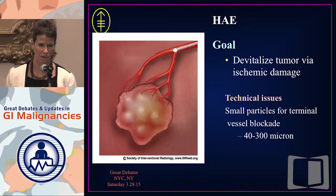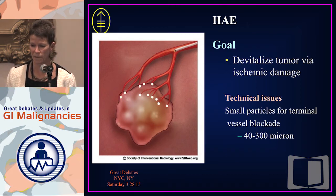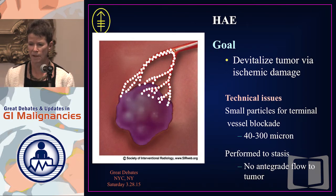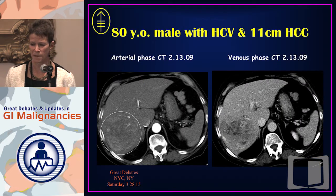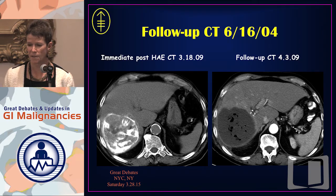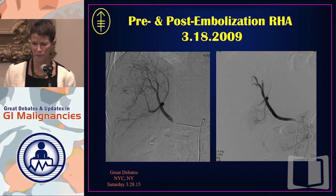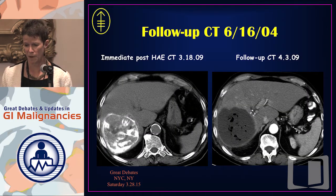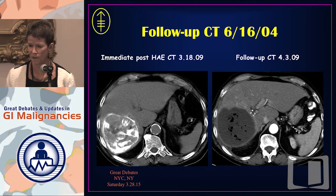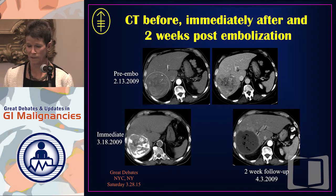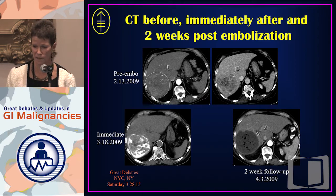With bland embolization, the tumor is devitalized by ischemia alone. We use small particles to block all the parent vessels, performed to stasis, and ischemia kills the tumor. This is an example of a patient who might fall into the locally advanced category — a big tumor in the right liver. This is the angiogram before and following embolization, and the contrast outlines the tumor due to trapping. About a month later, we see a devitalized tumor. This patient is still alive; I just saw him a couple weeks ago. He's had more treatments since then, but again, this says something about biology of disease.